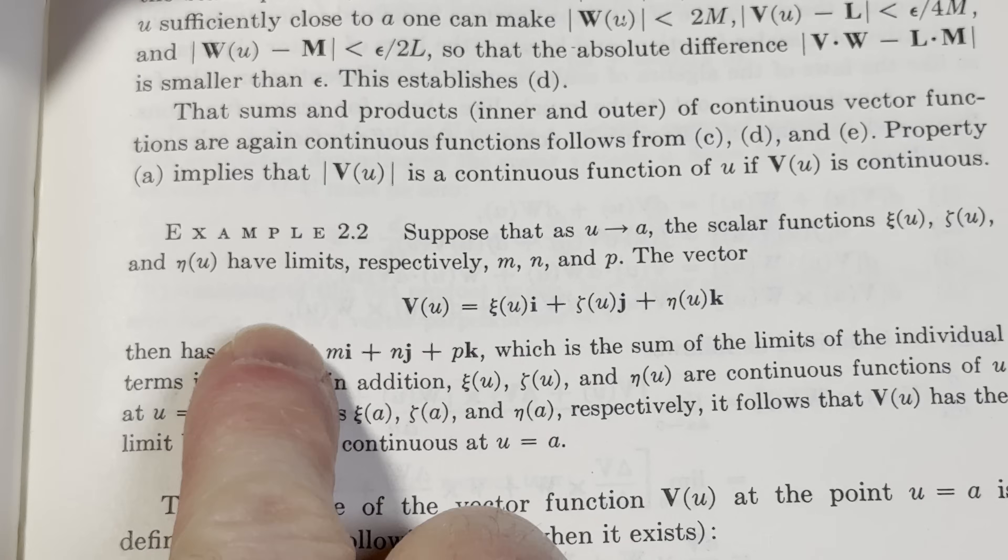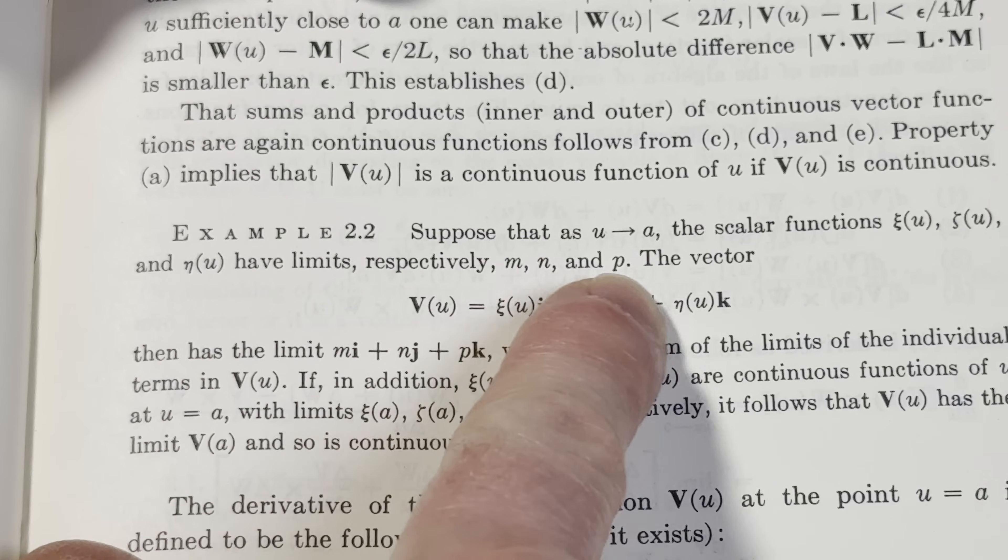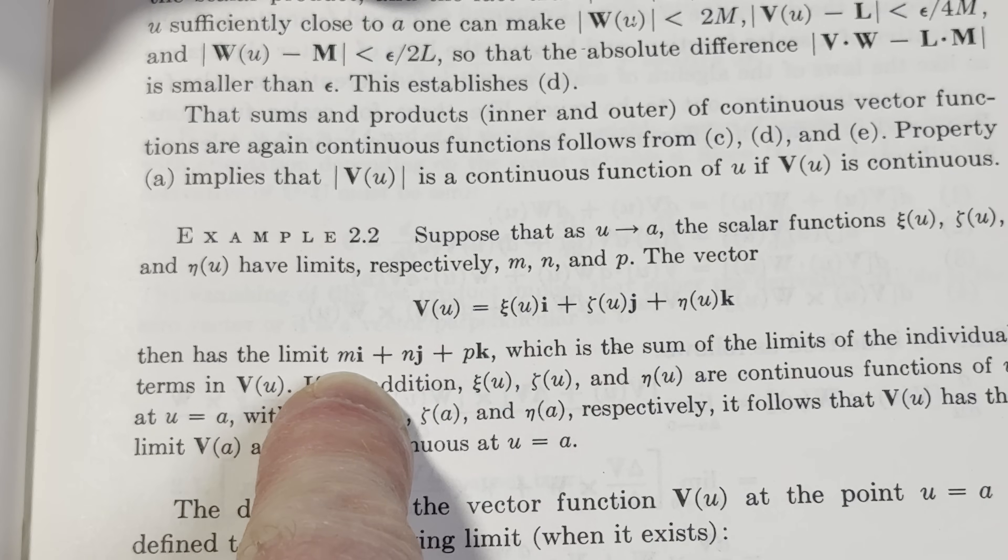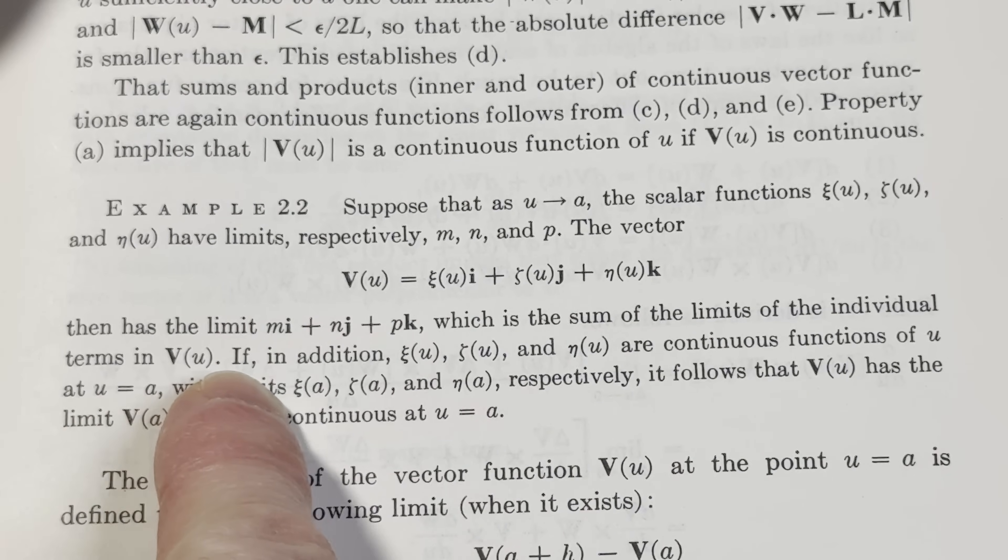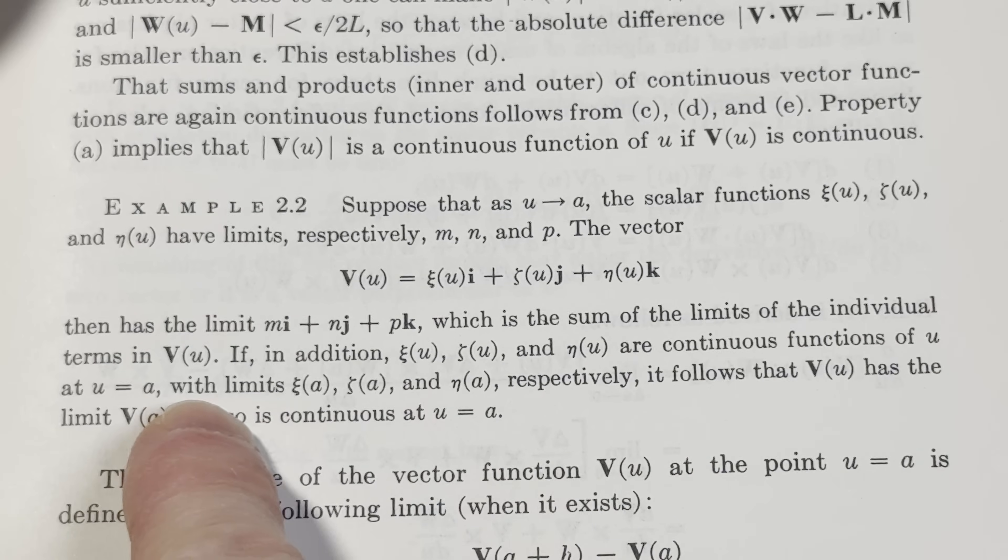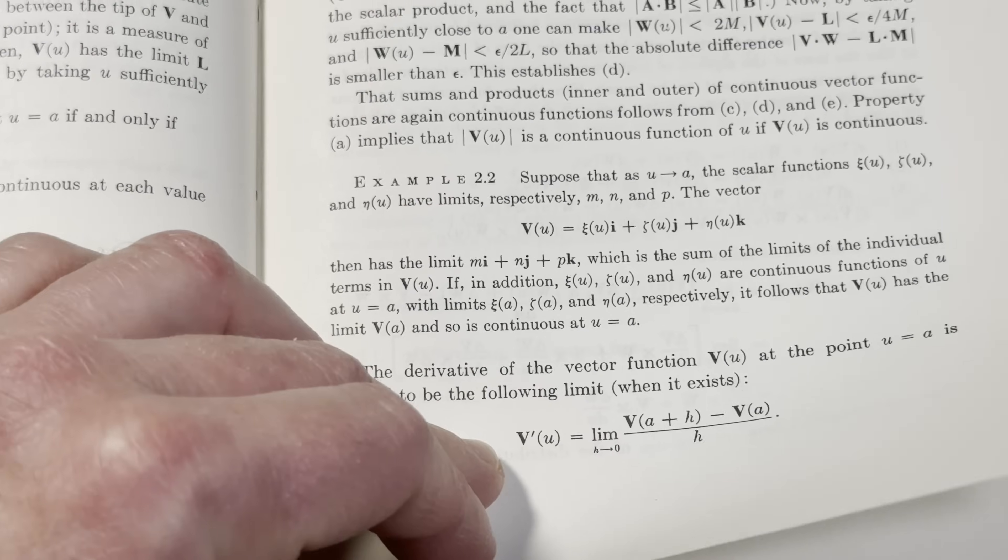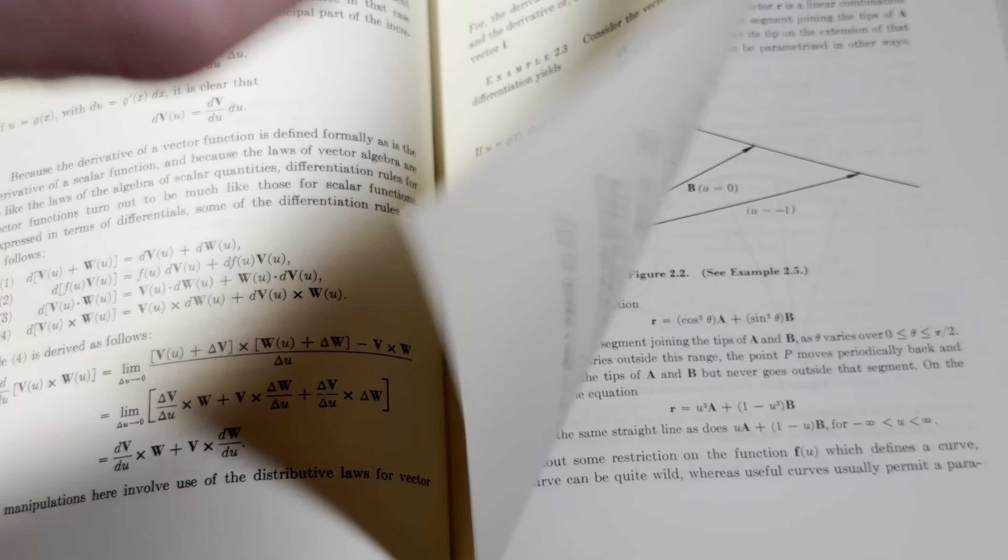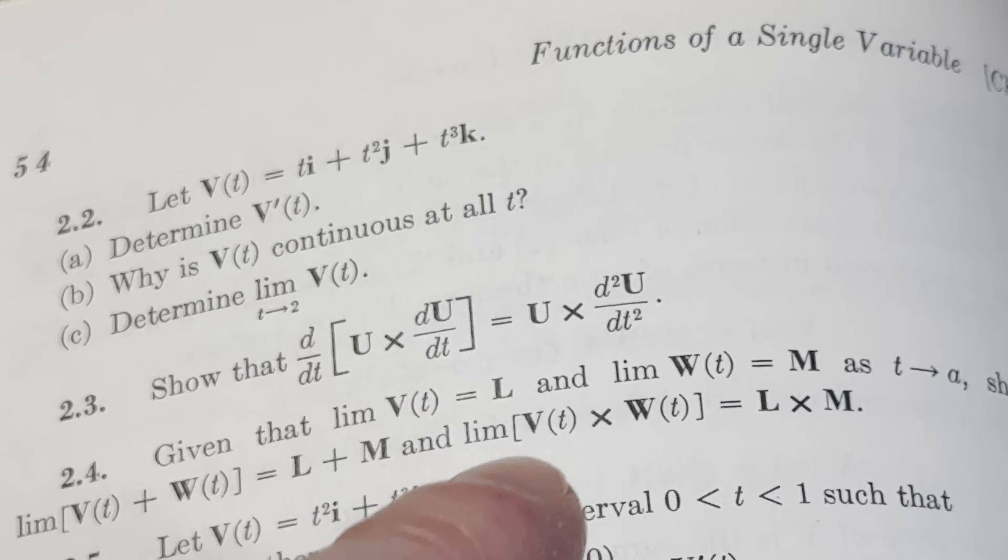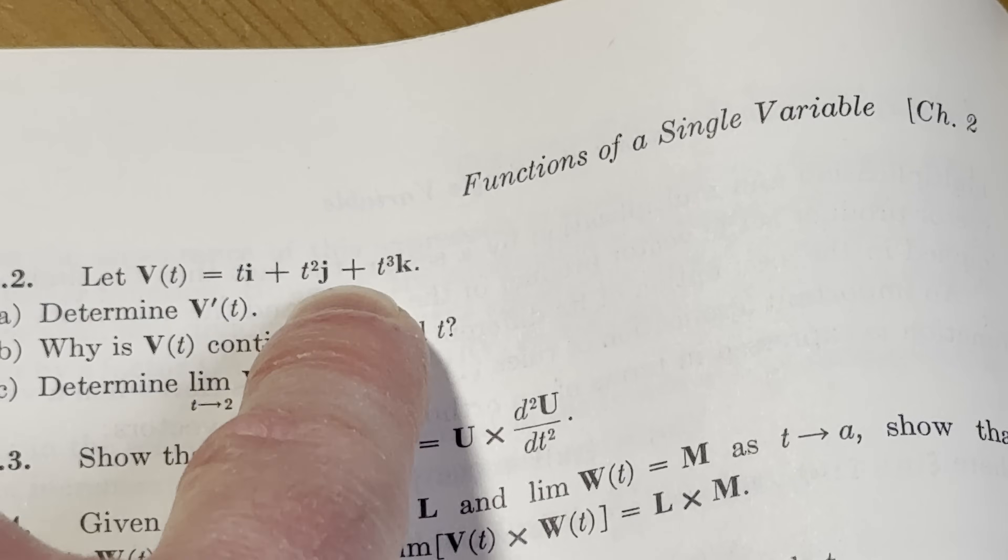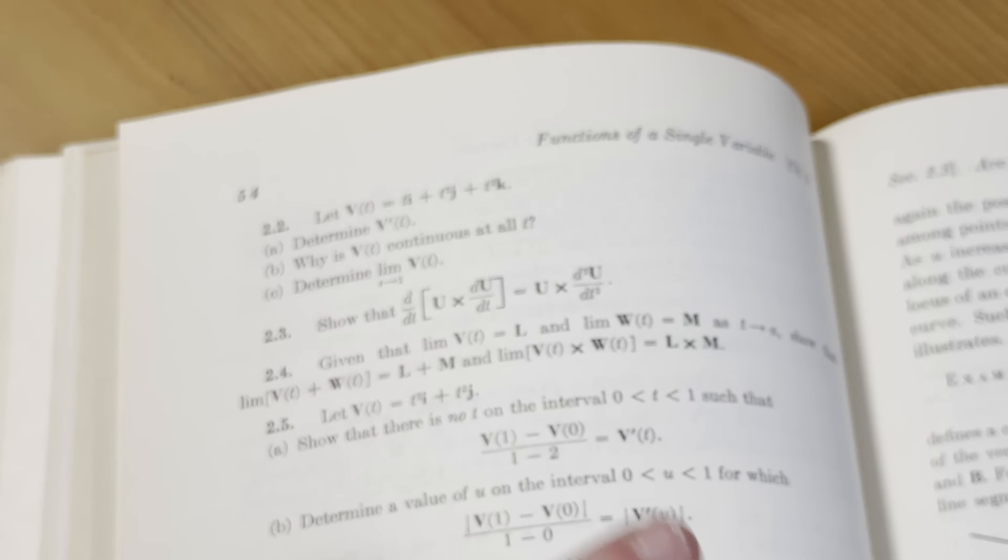Example 22: Suppose that as u approaches a, the scalar functions ξ(u), ƒ(u), and η(u) have limits, respectively, m, n, and p. Then this vector here has the limit mi plus nj plus pk because each of these have limits which is the sum of the limits of the individual terms in v of u. If in addition these are continuous functions of u at u equals a, it follows that v of u has the limit v of a and so is continuous at u equals a. So for any t, each of these functions is continuous at all t. If each of the component functions is continuous then the vector valued function itself will be continuous.